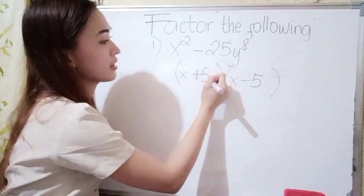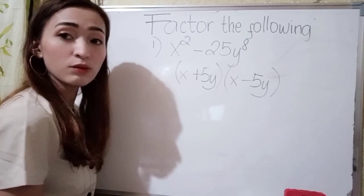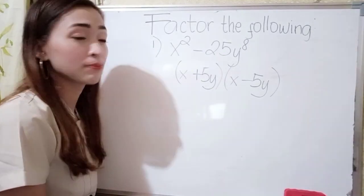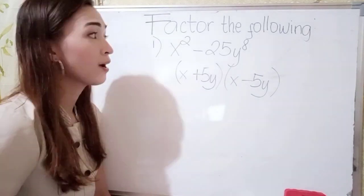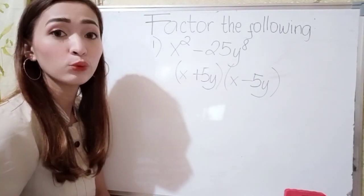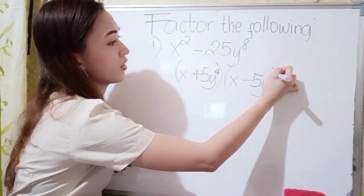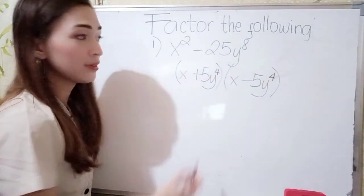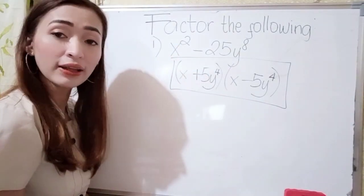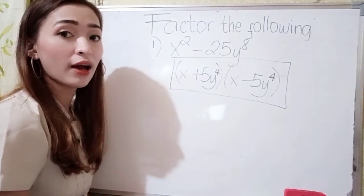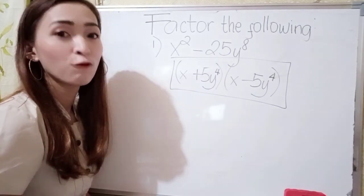Now we have y here, so just write y in both factors. For the exponent, just divide it by 2. So 8 divided by 2 is 4. So that is y to the 4th here and also y to the 4th here. Our final answer is x plus 5y to the 4th power, times x minus 5y to the 4th power.